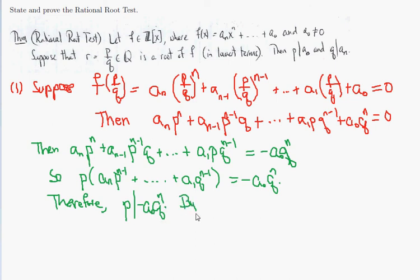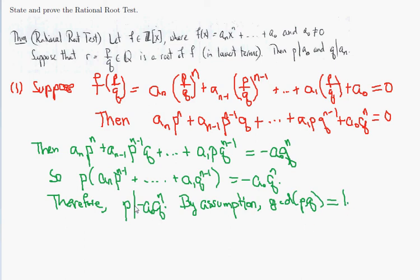Now, by assumption p and q have no common factors — p/q is in lowest terms, so the GCD of p and q equals 1. From a theorem proved in class, since p divides this product but p and q have no common factors, p and qⁿ also have no common factors. Therefore the only possibility is that p divides a₀.